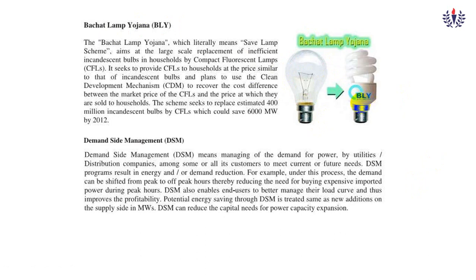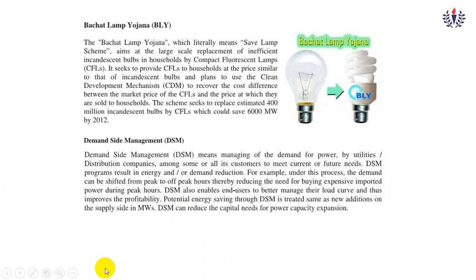We are now switching from CFL to LED lamps. The next topic is demand side management — managing demand for power by utilities and distribution companies among consumers with current and future needs. The demand can be shifted from peak to off-peak hours, reducing the need for expensive imported fuel. For example, residential load peaks from 6 to 9 PM, so industries may switch their operations from 9 PM to 6 AM, operating during off-peak hours and thereby reducing energy consumption.